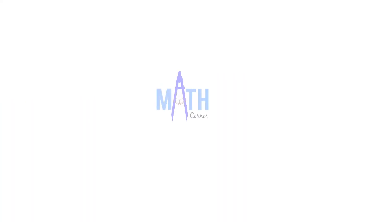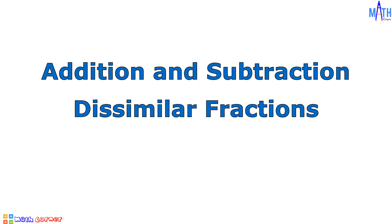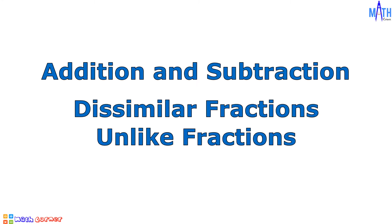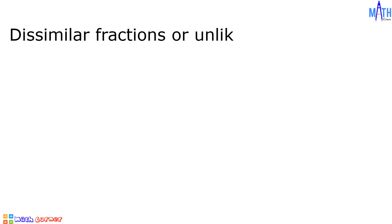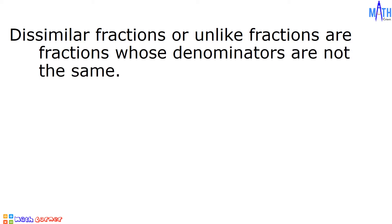Hello, everyone. Welcome to Math Corner. In this video, we will discuss the shortcut method in addition and subtraction of dissimilar fractions or unlike fractions. Dissimilar fractions or unlike fractions are fractions whose denominators are not the same. For example, we have 2 over 3 and 1 over 4. The denominators are not the same since 3 is not equal to 4. Let us add and subtract dissimilar fractions. Let us begin.